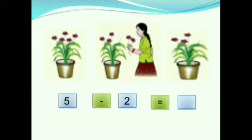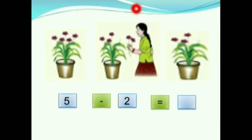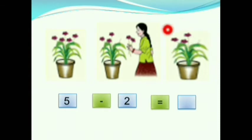Children, here there is a pot. In this pot, 5 flowers are there. A girl comes and picks 2 flowers. Now how many flowers are remaining? Let us count it. 1, 2, 3. 3 flowers are remaining. Therefore, 5 minus 2 is equals to 3.